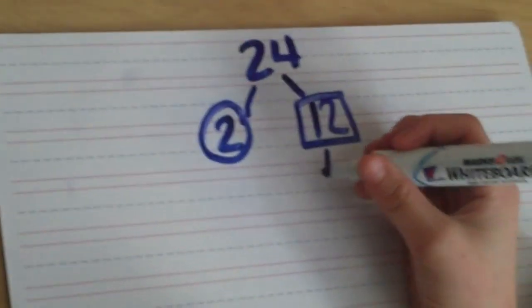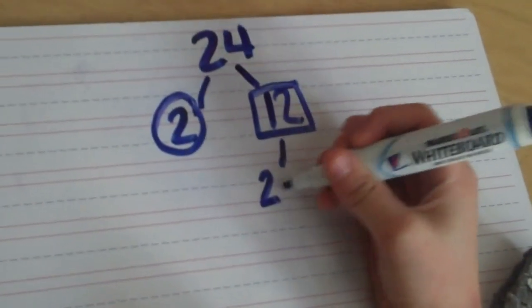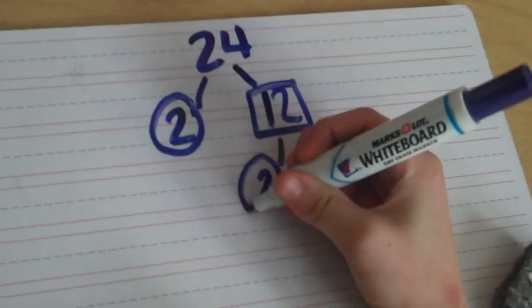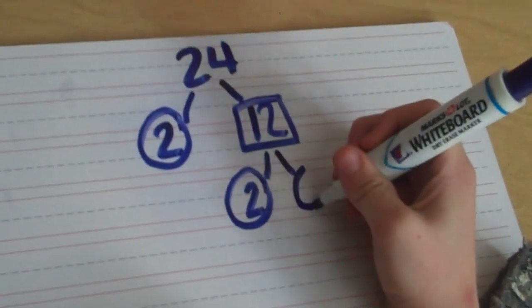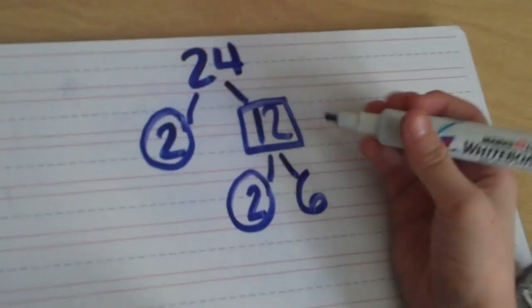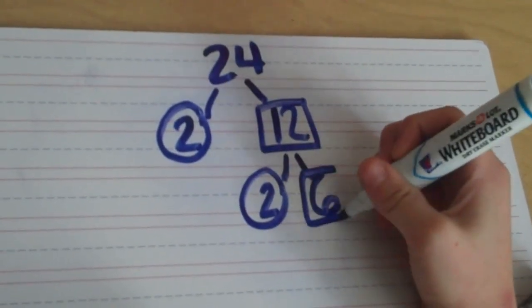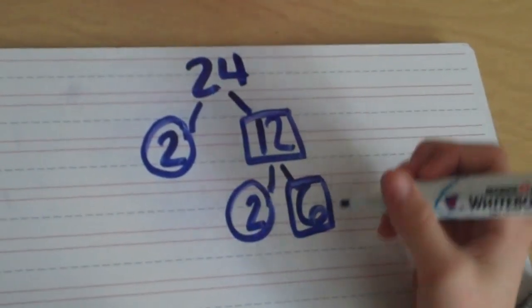Since 12 is an even number, I put the number 2 down and put a circle around 2 because 2 is a prime number. I put the number 6 down because 6 times 2 equals 12. Put a box around 6 because 6 is a composite number.